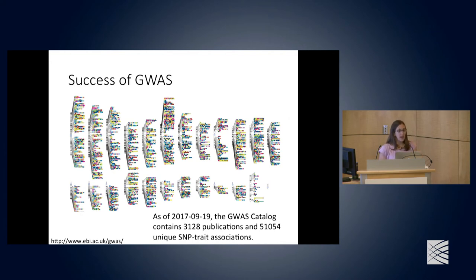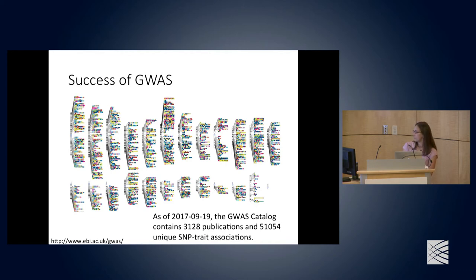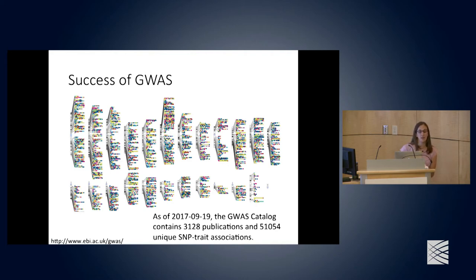GWAS have been very successful at identifying associations between SNPs and outcomes. The GWAS catalog, checked just two weeks ago, contains about 3,000 publications and 51,000 unique SNP-trait associations. That number of unique SNP-trait associations has actually doubled since last year in 2016, when there were about 25,000. People are still very successfully finding variation through genome-wide association studies.